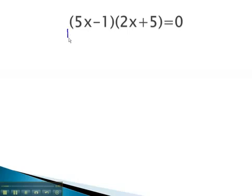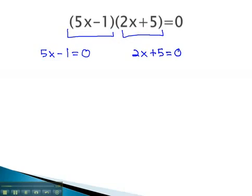In this problem, we have two factors, 5x minus 1 and 2x plus 5, that multiply to equal 0. This means one of the factors must be 0. So we write 5x minus 1 equals 0, or 2x plus 5 equals 0, and solve these two equations to find our solutions for x.